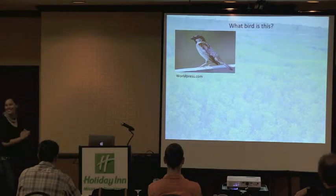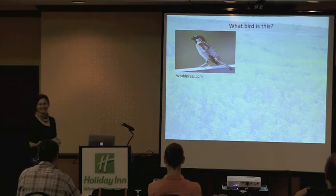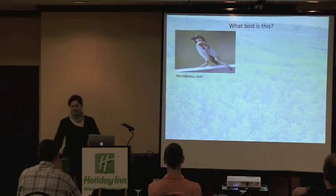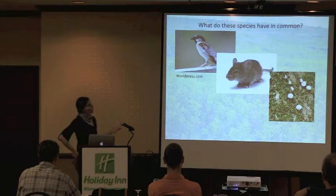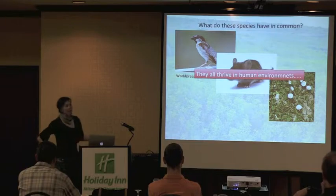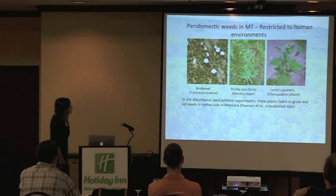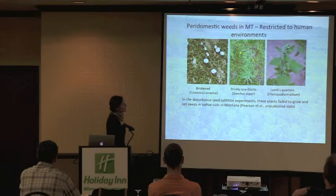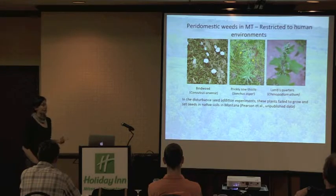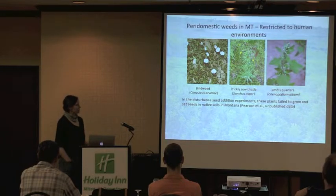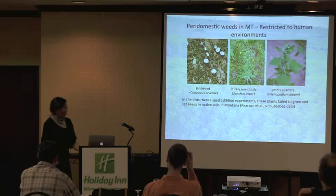House sparrows, house mice, and bindweed all share something in common — they thrive in human environments. Similarly, there's a set of weeds: bindweed, prickly sow thistle, and lamb's quarters, that are abundant in our gardens but in Dean's surveys don't establish in native grasslands — even if you disturb the soil and add seeds, they fail. There's something about urban environments that allows them to thrive there but not in native grasslands.